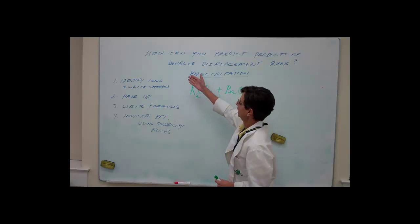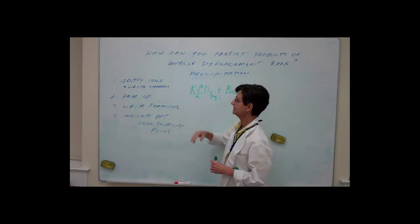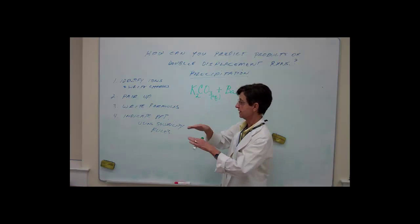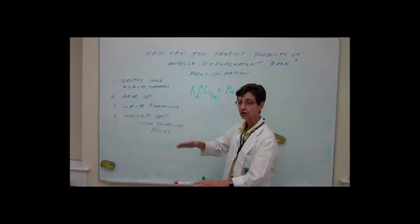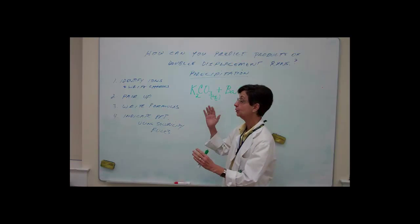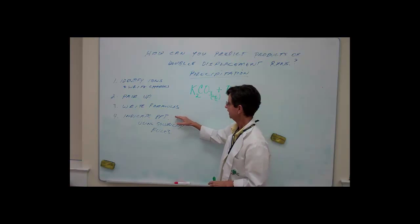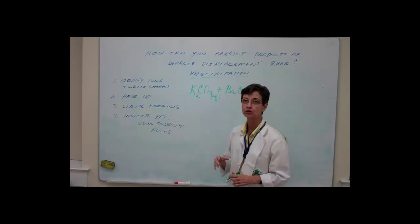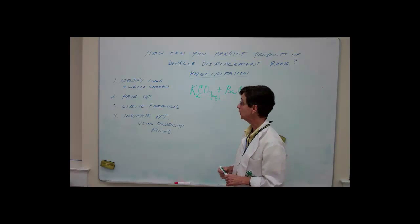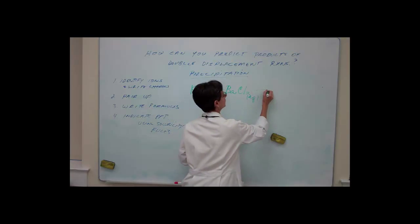I've written down some rules for how we can do this. Number one: identify the ions and write the charges. Pair them up, cation with anion. Write the formulas correctly and indicate the precipitate using solubility rules.